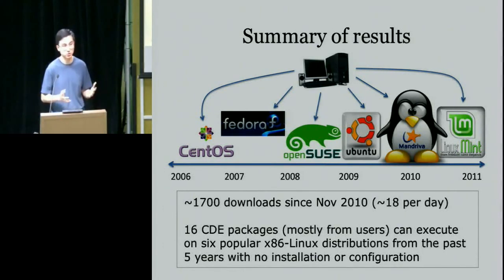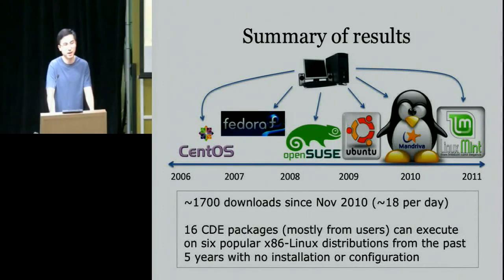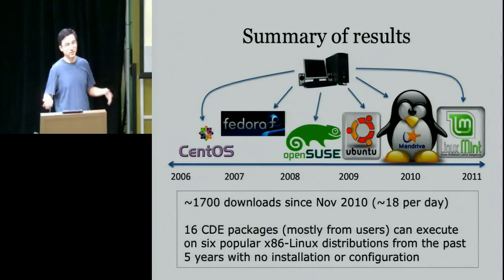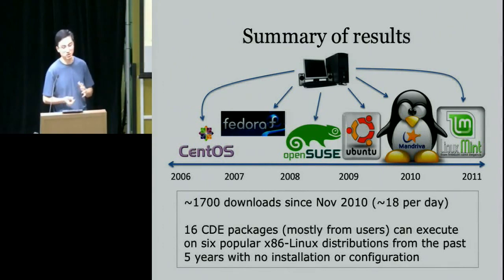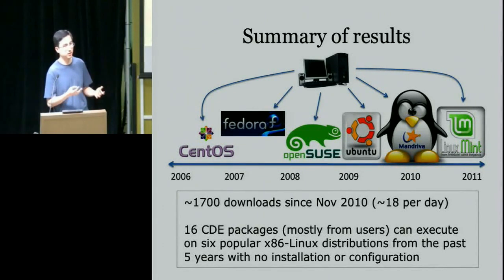The high bit from the experiments is that 16 CDE packages — mostly from users — can execute on popular x86 Linux distributions from the past five years with no installation or configuration. We asked users for their packages, then ran them on six popular distributions whose kernels span from 2006 to the end of 2010, and they just ran out of the box with no installation needed. These programs ranged from scientific scripts to games, 3D applications, and other research tools.